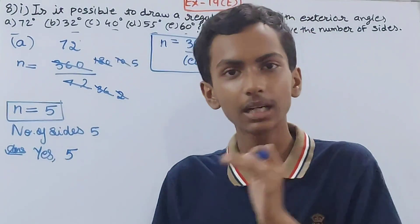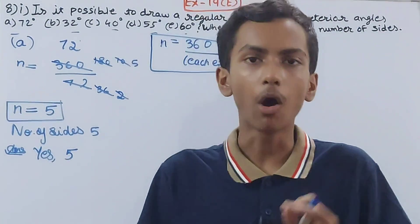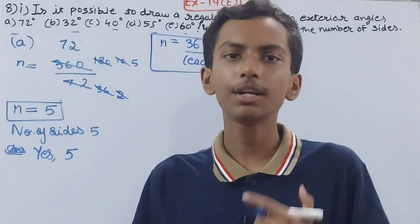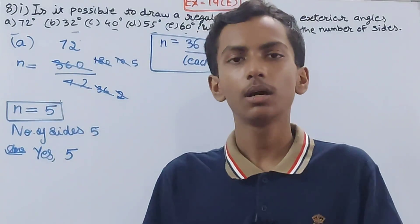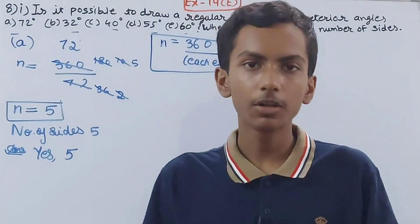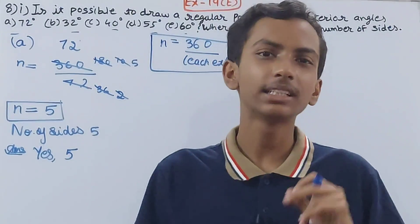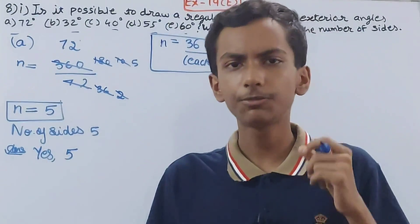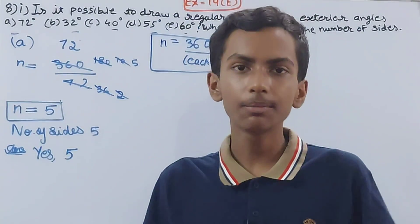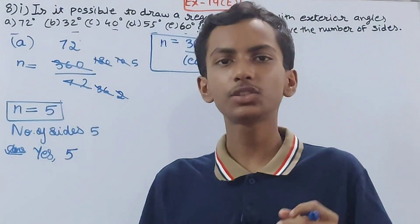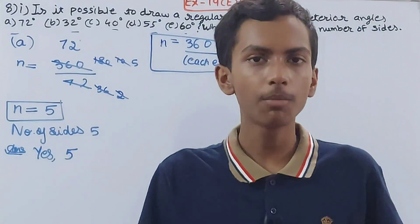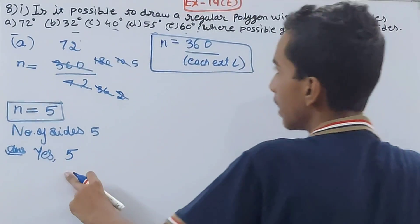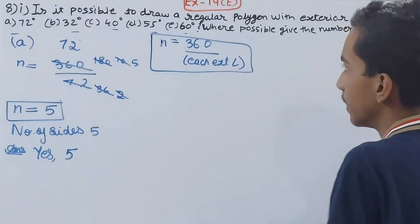If the number of sides comes out to be a whole number, it will form a regular polygon. If the number of sides is a fraction or decimal — not a complete number — then it is not going to form any polygon. Here, 5 is a whole number, so it forms a polygon.